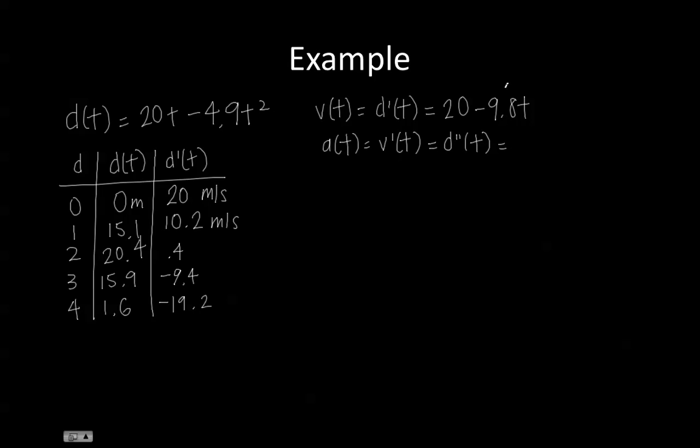So if you take the derivative of this function over here, you get negative 9.8, which is a constant. So now we know that the second derivative for our displacement function over here is equal to 9.8 meters per second squared.